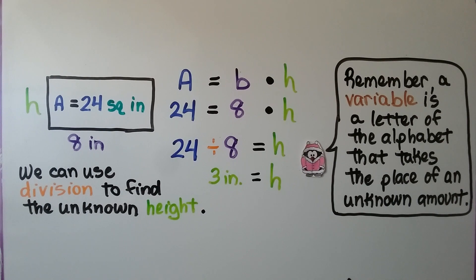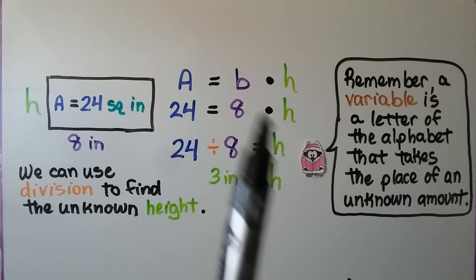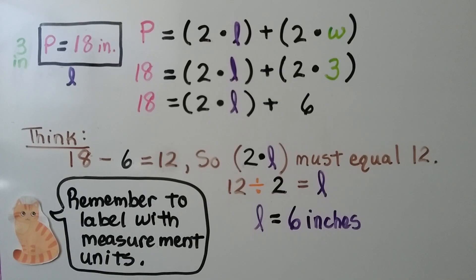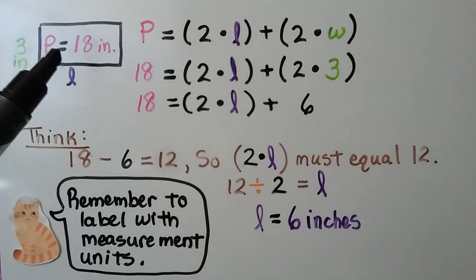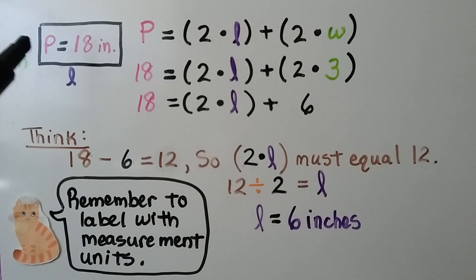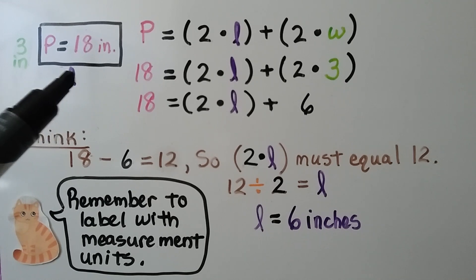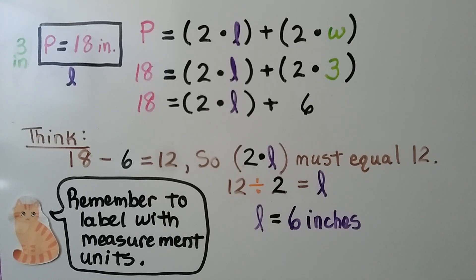Remember, a variable like the letter h or b is a letter of the alphabet that just takes the place of an unknown amount. For this rectangle, we're told the perimeter is 18 inches and one side is 3 inches. We don't know what the length is. We use a script l because if we used a lowercase l, it would look like a 1 — so script l stands for length.